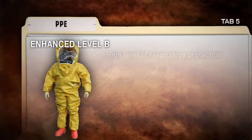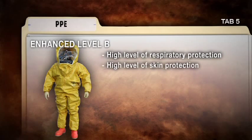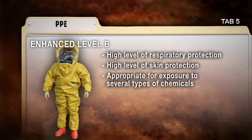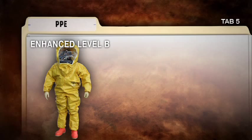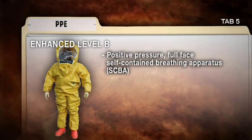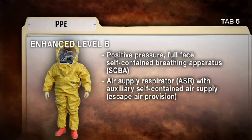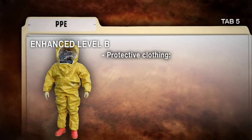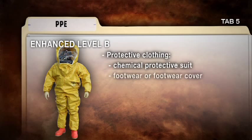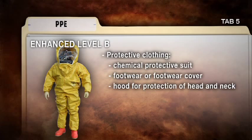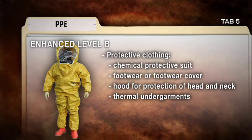Enhanced Level B protection should be used when a high degree of both respiratory and skin protection is necessary. Enhanced Level B protection is appropriate for exposure to several types of chemicals. The Institute defines Enhanced Level B protection as follows: Positive Pressure Full Face Self-Contained Breathing Apparatus, SCBA, or Air Supply Respirator, ASR, with an Auxiliary Self-Contained Air Supply and Escape Air Provision. Protective clothing includes a chemical protective suit, footwear or footwear cover, a hood for protection of head and neck, and undergarments to provide thermal protection for exposure to liquid chlorine.